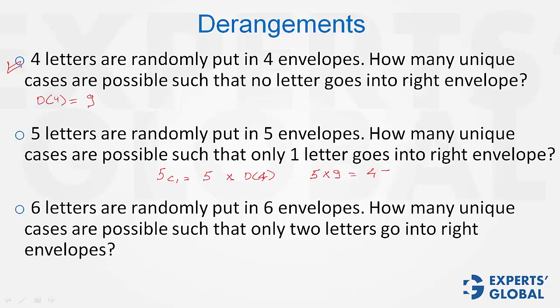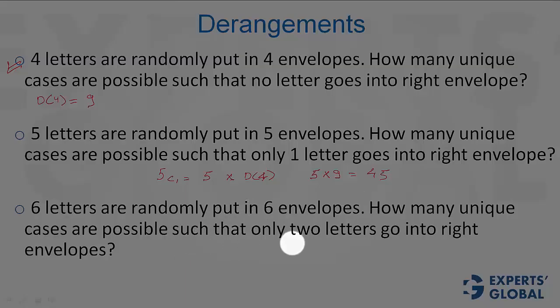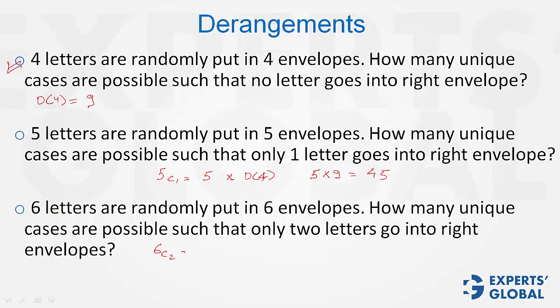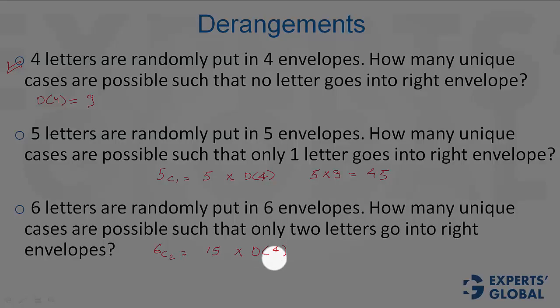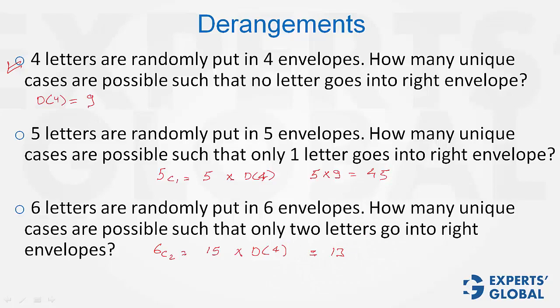Look at the last question here. There are 6. 2 go into the right envelope. So, it was 6. 2 can be selected in 6C2, that is 15 ways. And the remaining 4 can be deranged in d4 ways. So, the answer is 15 into d4. d4 is 9, we just saw. The answer is 15 times 9, 135.